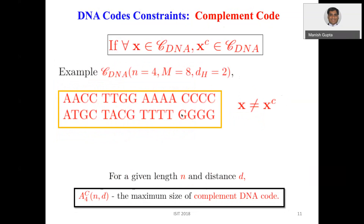A DNA code is called a complement code if for every x in C_DNA, its complement is also inside the set. For example, the complement of AACC is TTGG, which is present in the set. Similarly, the complement of AAAA is TTTT, which is also there. We can find A_4^c(n, d), the maximum size of a complement DNA code.